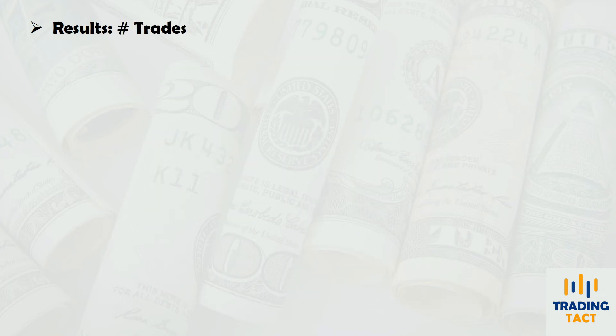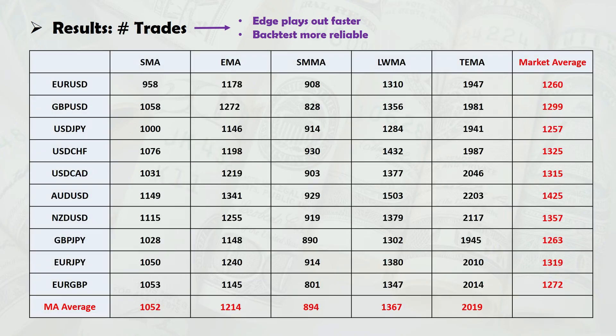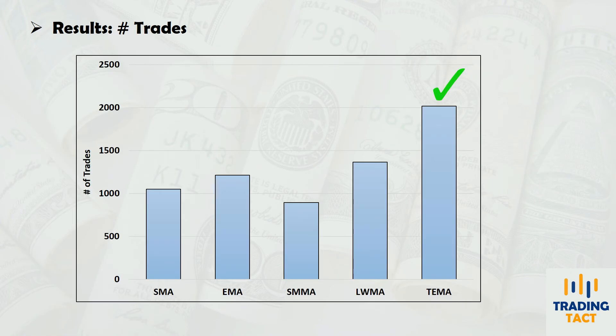For number of trades — all else being equal, a strategy that trades frequently is desirable because your edge plays out faster and a larger sample size makes your back-test more reliable. The triple exponential moving average is the surprising winner here, although it doesn't fare well in net profit. This is likely because its high reactiveness keeps the moving average close to price, making a penetration more likely.